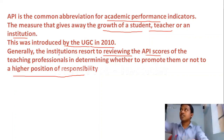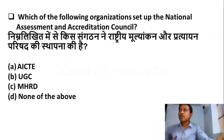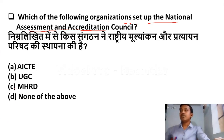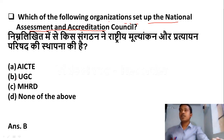The next question is: which of the following organizations set up the National Assessment and Accreditation Council — NAAC? Option A: AICTE. Option B: UGC. Option C: MHRD. Option D: None of the above. The right answer is that NAAC is set up by UGC — University Grants Commission.